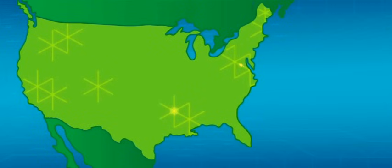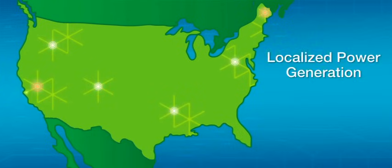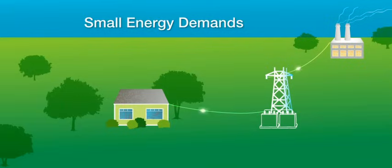Our current electric grid was conceived more than 100 years ago when electricity needs were simple. Power generation was localized and built around communities. Most homes had only small energy demands such as a few light bulbs and a radio.